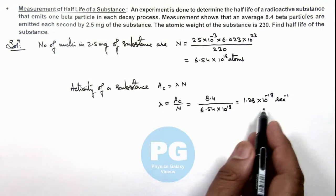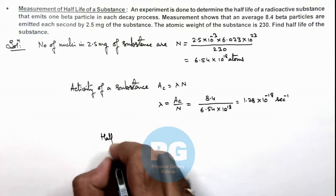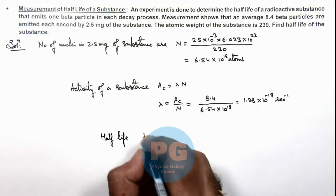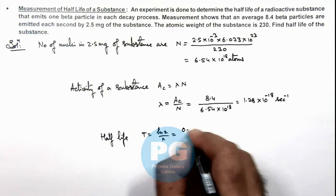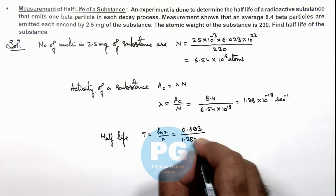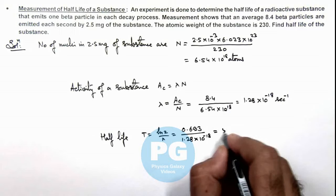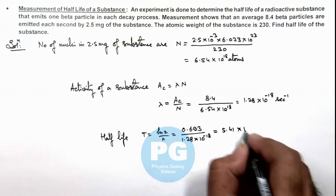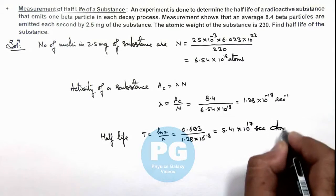As we are having the decay constant, we can directly calculate the half-life of substance, which is ln(2) by lambda, that is 0.693 upon 1.28 × 10^-18. On solving we get 5.41 × 10^17 seconds. That is the final result of this problem.